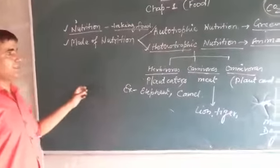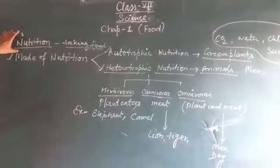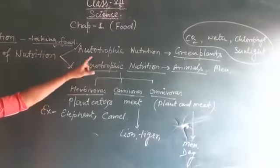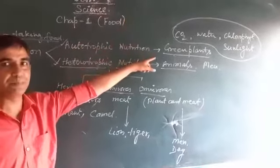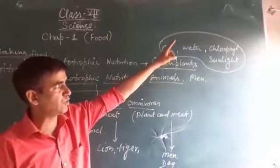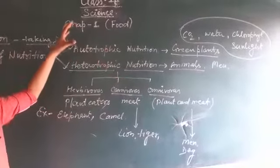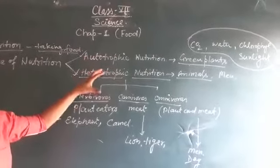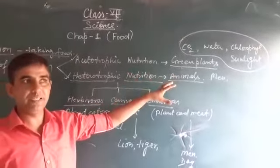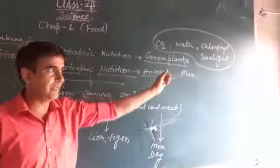Let us summarize. Nutrition means taking food and its utilization. Mode of nutrition has two types: autotrophic nutrition and heterotrophic nutrition. In autotrophic nutrition — example, green plants — they make their food from simpler inorganic substances like CO₂, water, chlorophyll, and sunlight. In heterotrophic nutrition, animals depend on other animals and plants for food; they cannot make food from simpler inorganic substances — like animals and we human beings.